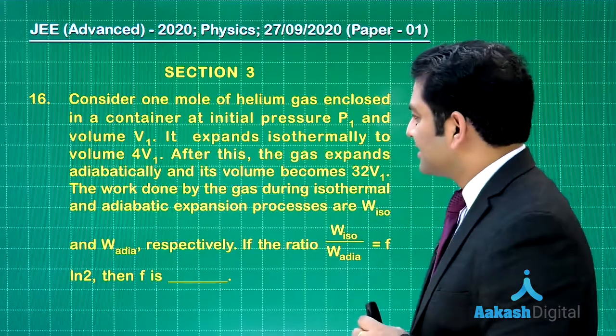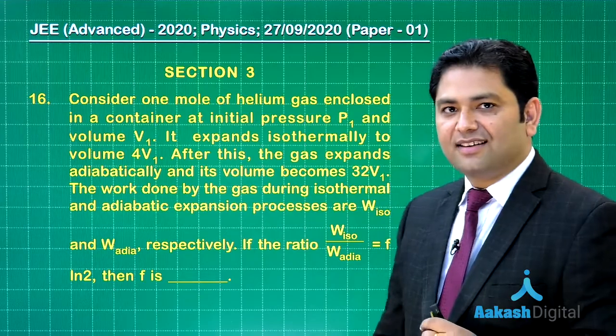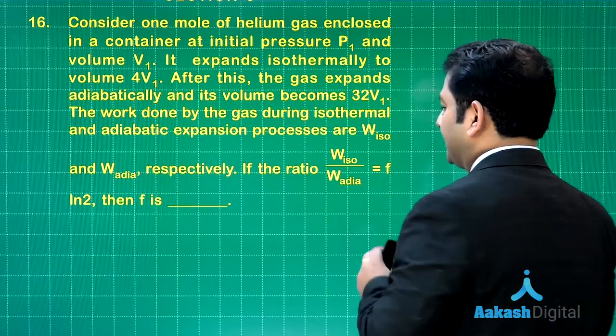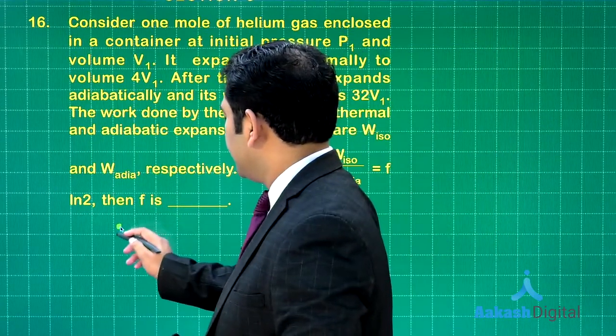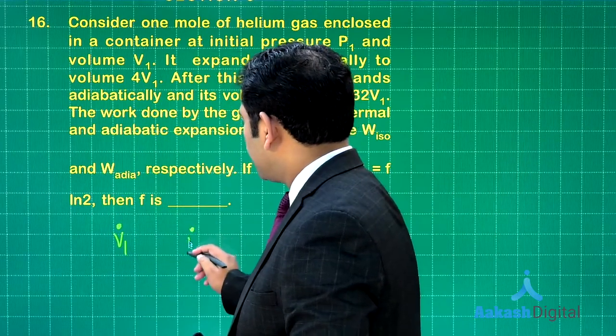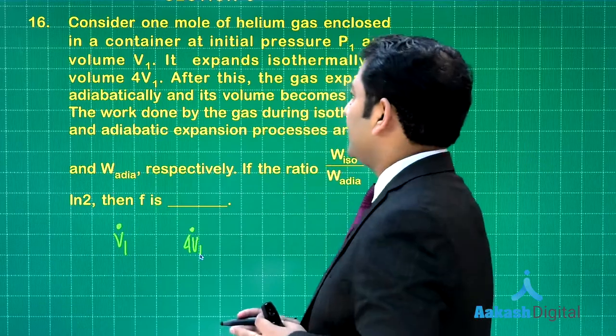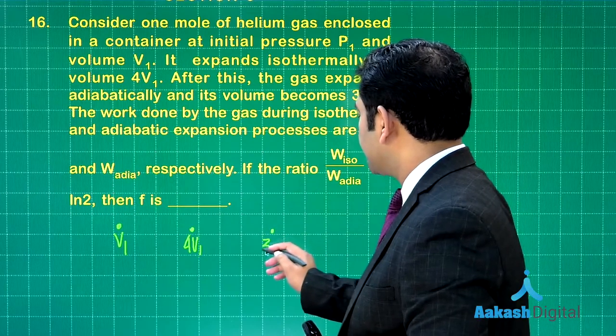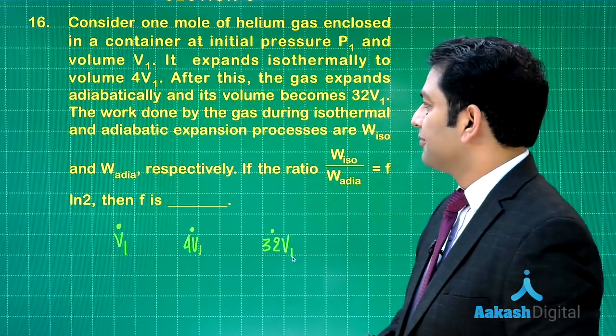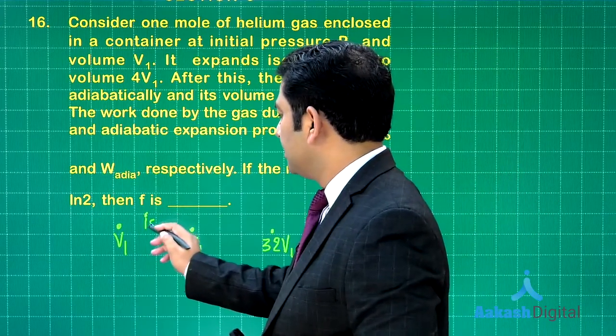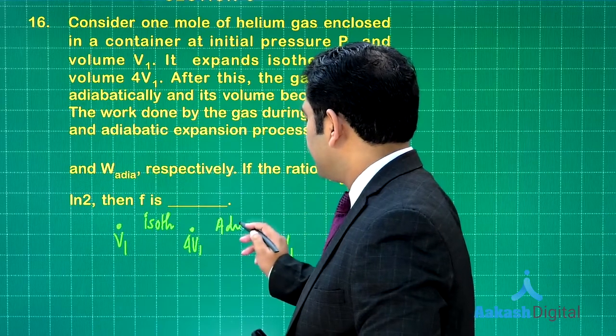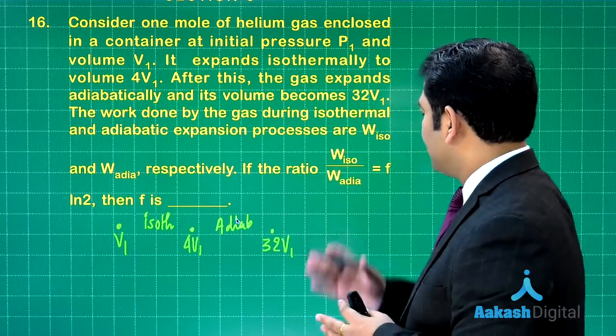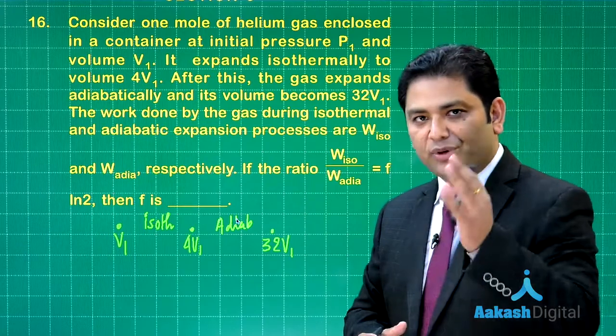Question number 16 is from thermodynamics and is straightforward formula-based. There are two processes: one is isothermal, another is adiabatic. Initially the volume is v₁. Isothermally the volume becomes 4v₁, so it's an isothermal expansion. After that, adiabatically the volume has been made 32 times v₁. In both situations we need to calculate the ratio of work done, W_iso by W_adiabatic, that's f natural log 2, and we need to calculate the value of f.